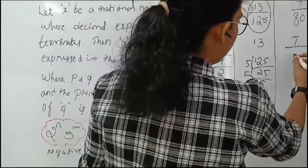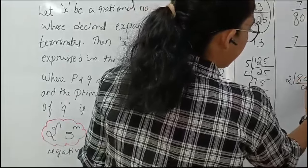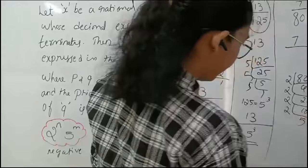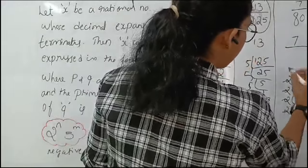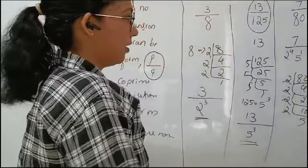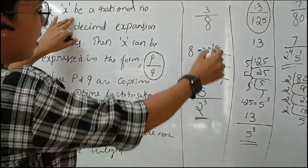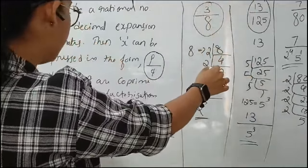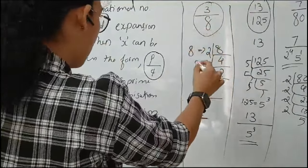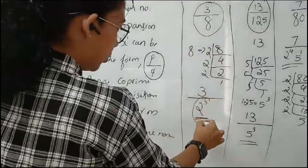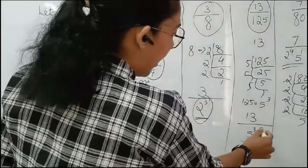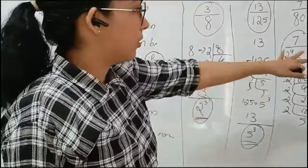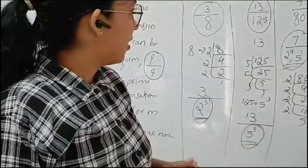Next one is 7 by 80. 7 is a prime number. The factors of 80 are: 40, again 20, again 10, giving 2 and 5. So it can be written as 2 to the power 4 and 5 to the power 1. As per the theorem, let X be a rational number whose decimal expansion terminates; X can be expressed as P by Q where P and Q are co-prime and the prime factorization of Q is of the form 2 raised to N times 5 raised to M. Here it is 2 to the power 4 and 5 to the power 1.